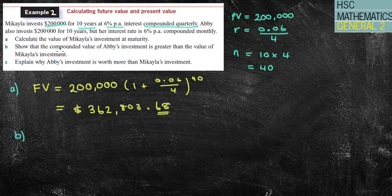The next part of my question says, show that the compounded value of Abby's investment is greater than the value of Michaela's investment. So this is going on to the next part of the question, which I probably should have read. Abby also invests $200,000 for 10 years, but her interest rate is 6%, compounding monthly. So you can see the first one was quarterly, the second is monthly. It's saying show that it will be greater than. So we know that it's going to be greater than, so let's hopefully show that.